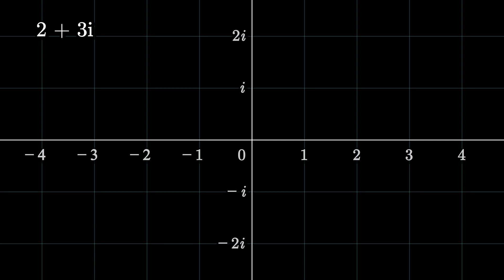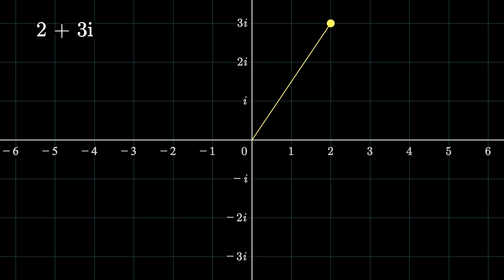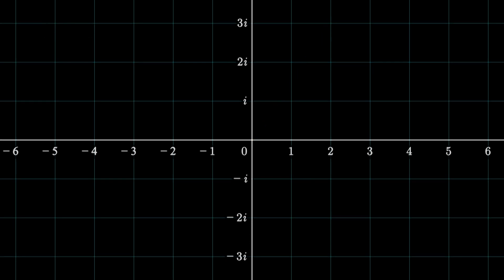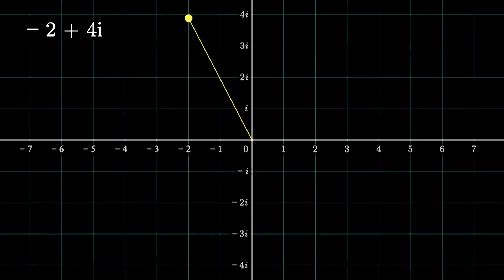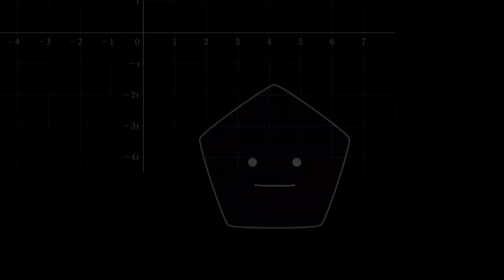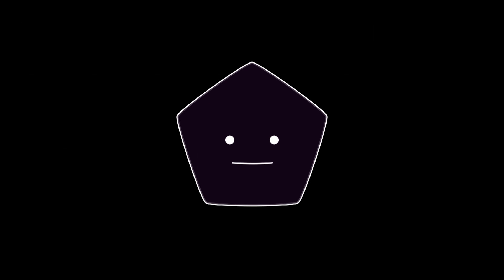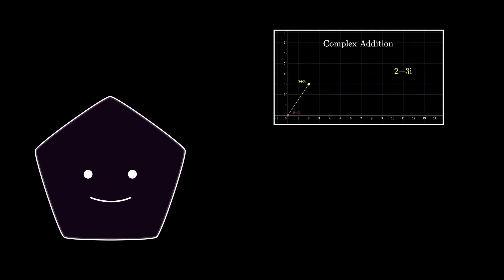So using these two axes we can represent any complex number we want. For example, for the number 2 plus 3i, we have to walk two units along the real axis and three units along the imaginary axis. Again, if the number is minus 2 plus 4i, we need to walk two units along the opposite direction of the real axis and four units along the imaginary axis. But hey, the best part of complex numbers is to visualize their different operations like addition and multiplication.